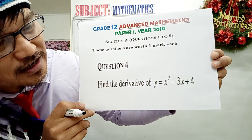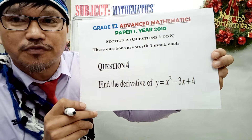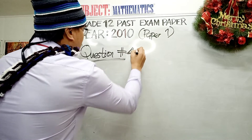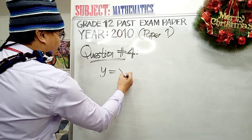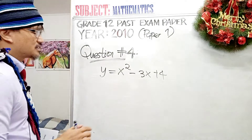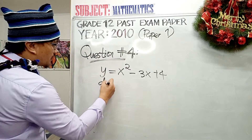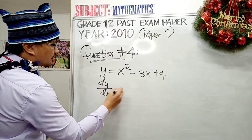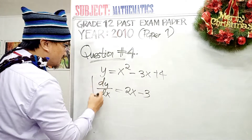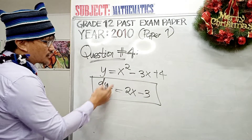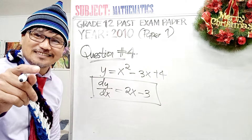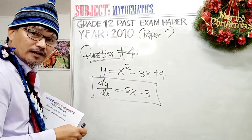Find the derivative of the function y = x² − 3x + 4. This is very easy — this is just a bonus question, worth only one mark. The original function is y = x² − 3x + 4. The derivative of the function y with respect to x is 2x − 3. That is the final answer. The derivative of y with respect to x, given y = x² − 3x + 4, is equal to 2x − 3. That's how you get the derivative based on differential calculus.